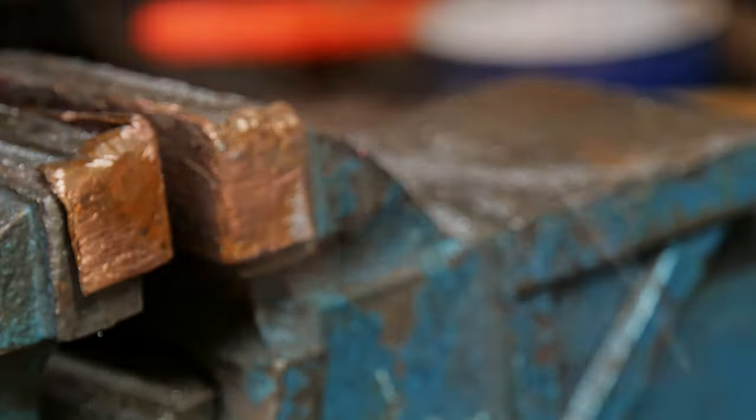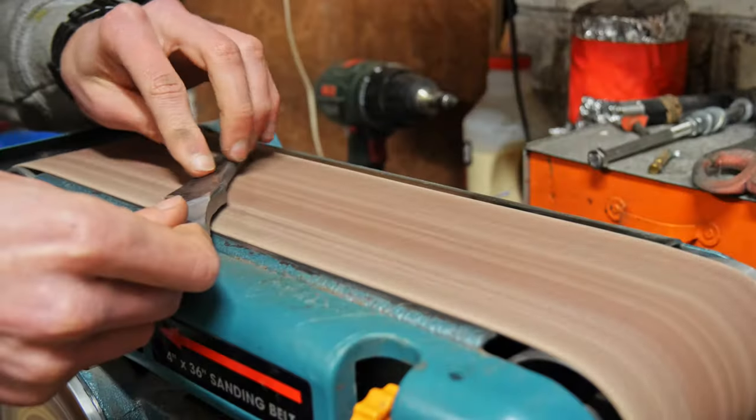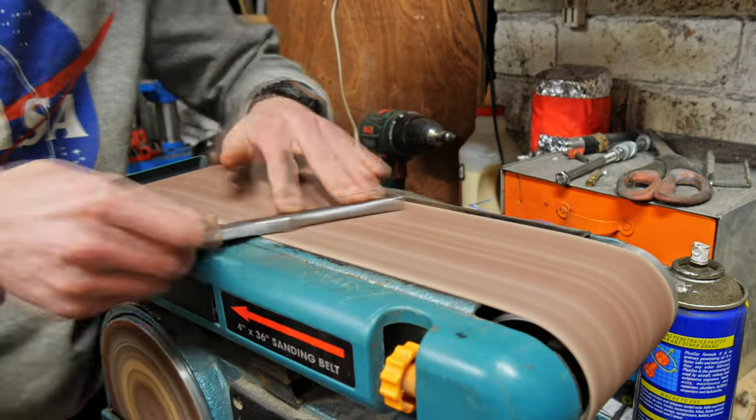After a little bit more fine shaping using files I then moved on to using the belt sander to smooth everything out and remove all of the deep scratches left by the files.